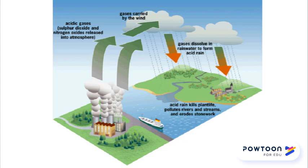Nitric acid production also releases nitrogen oxide as a waste substance, which is then carried by the wind to the atmosphere. Eventually, the gas dissolves in the rain and causes the rain to be acidic. The acidic precipitation falls onto the earth and if it flows into the river, can cause harm to aquatic lives.